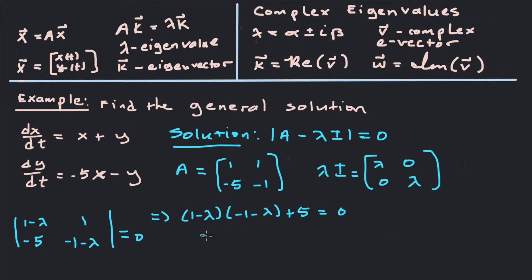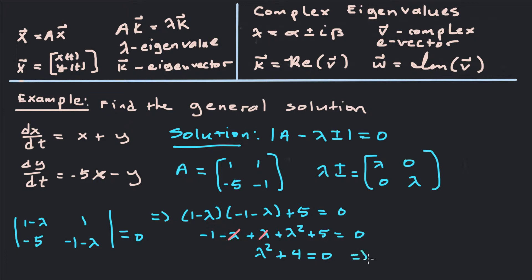Multiplying that out, we get −1 − λ + λ + λ² + 5 = 0. We get some cancellations: lambda cancels with minus lambda, and negative 1 plus 5 is 4. So this becomes λ² + 4 = 0, which tells us λ² = −4, so lambda equals 0 plus or minus 2i. Therefore alpha equals 0 and beta equals 2.